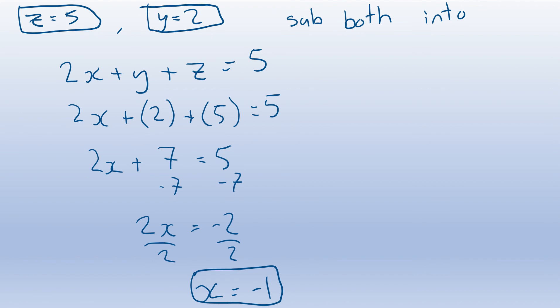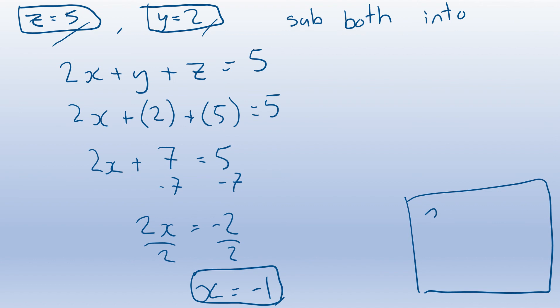Our three answers are: x equals minus 1, y equals 2, and z equals 5.